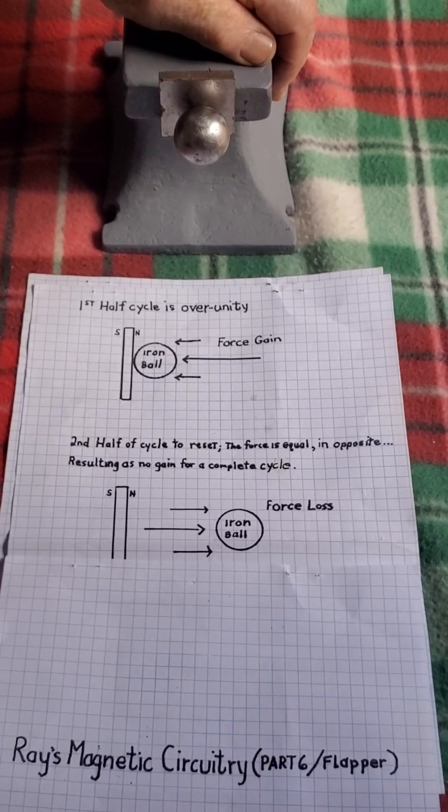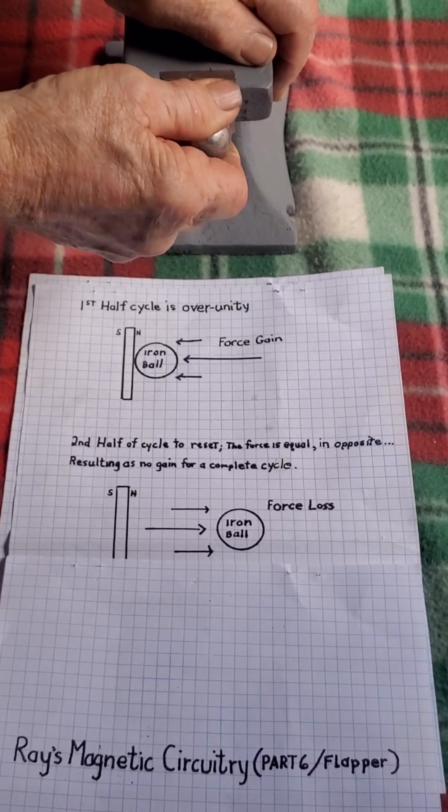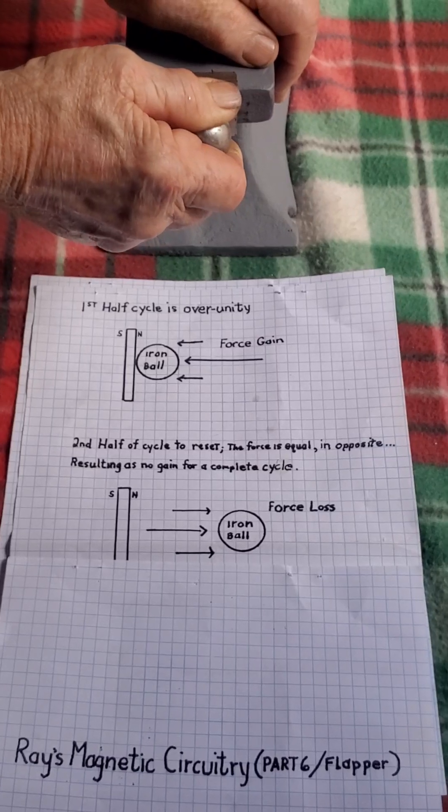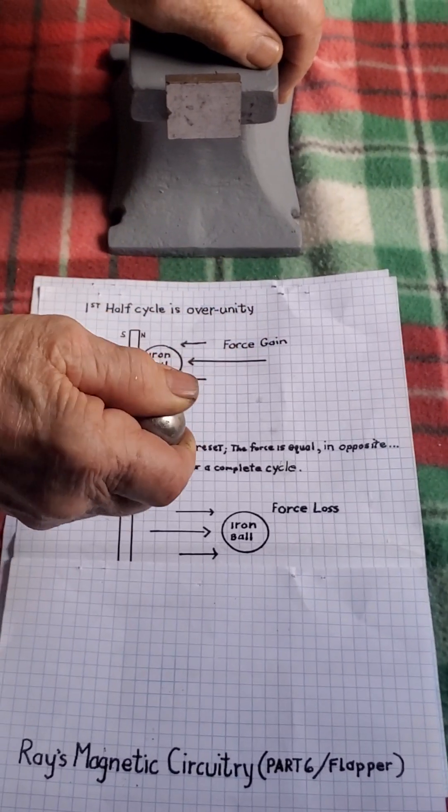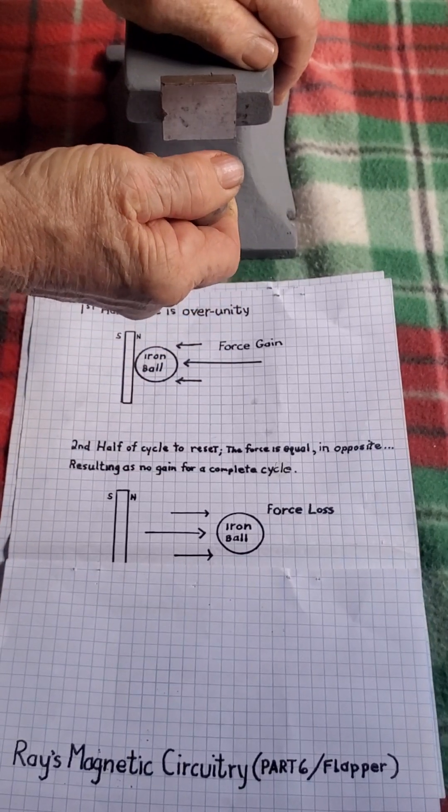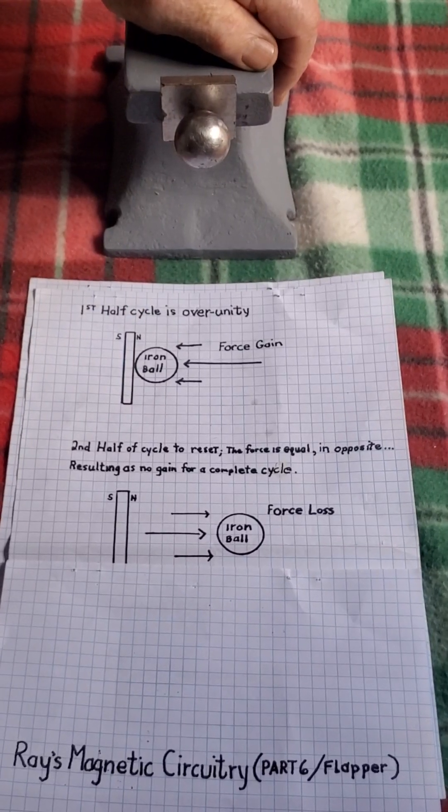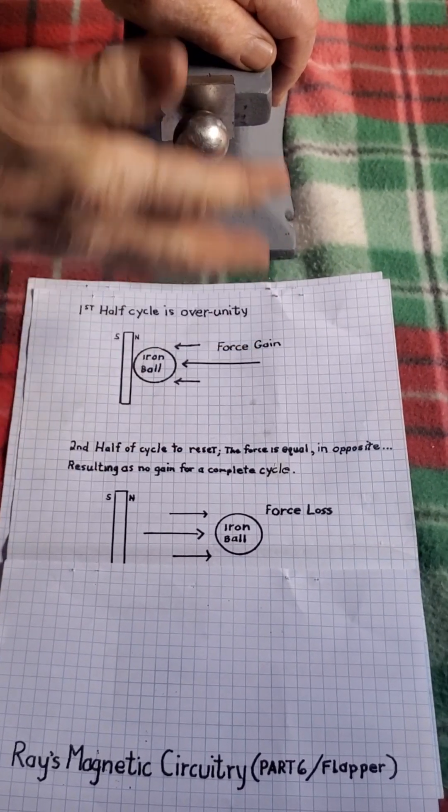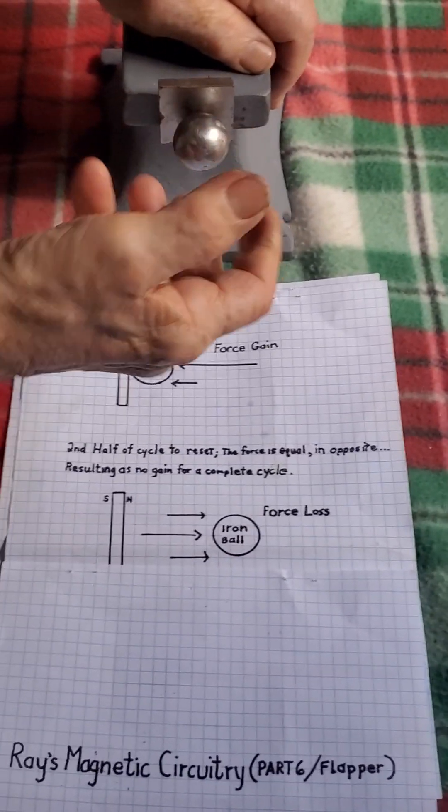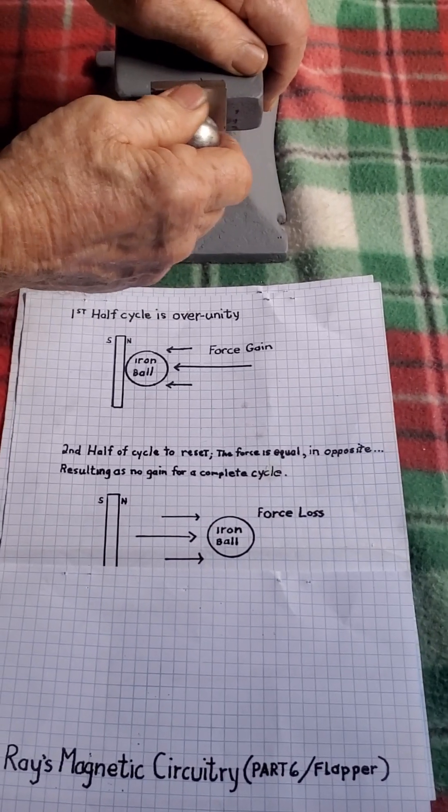The second half of the cycle is to reset. The force is equal and opposite, resulting in no gain for a complete cycle. This is where most over-unity devices that use magnets fail. They can be attracted and produce power, but then when it tries to reset, it sticks or it grips, and it cannot move freely out of that.